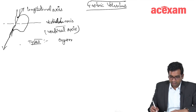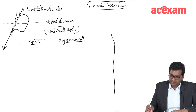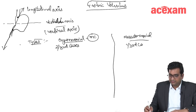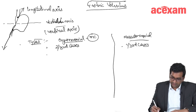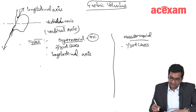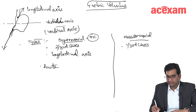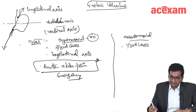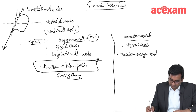There are two types: first is organoaxial, second is mesenteroaxial. Organoaxial is seen in two-thirds of cases — it is more common. Mesenteroaxial is seen in one-third of cases — it is less common. Organoaxial is torsion along the longitudinal axis and it presents with acute abdominal pain as an emergency. Whereas mesenteroaxial occurs along the vertical axis and is partial and recurrent.